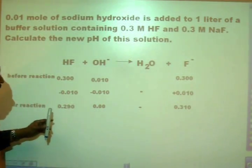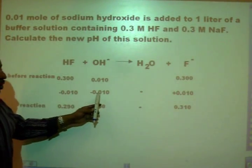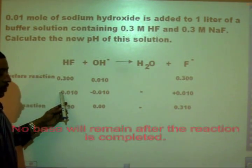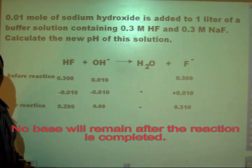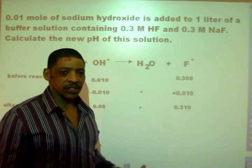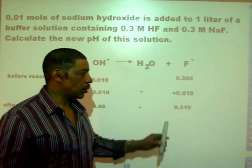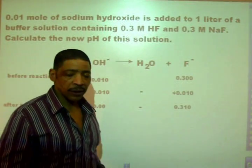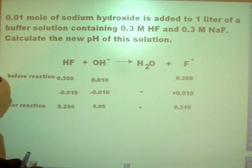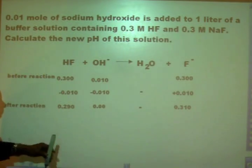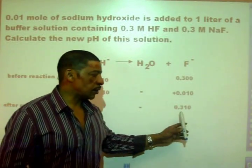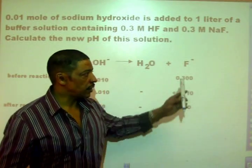During the course of the reaction, all of the sodium hydroxide will be consumed by the acid, so both concentrations will decrease by 0.01 molar. The concentration of our fluoride anion will increase by 0.10 molar. This will give us a final concentration of 0.290 molar for the acid and 0.310 molar for the anion.